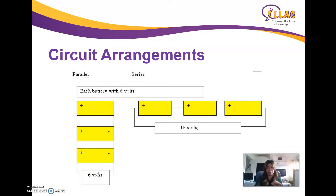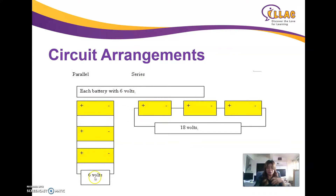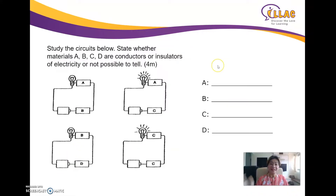In a parallel circuit, the batteries do not combine to run the circuit together. Therefore, if you want a brighter bulb, connect them in series. If you want bulbs to run independently of each other, use a parallel circuit.